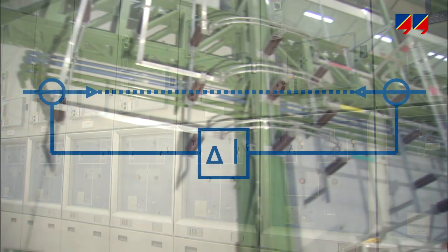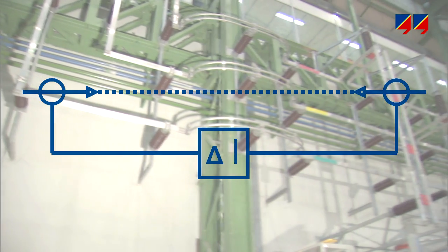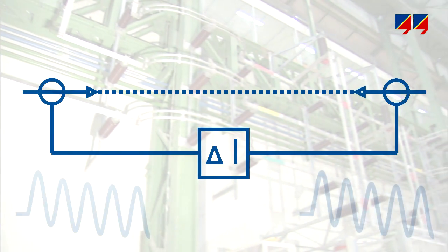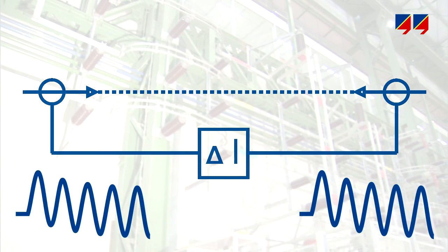And vice versa. Busbar, generator, or transformer differential relays may trip erroneously if saturation of individual CTs in the scheme causes current imbalance.